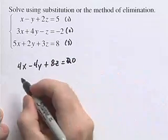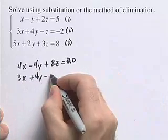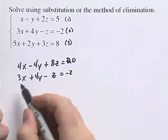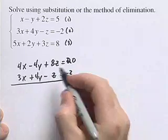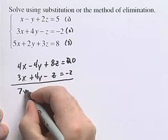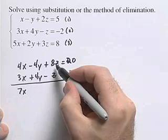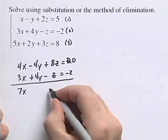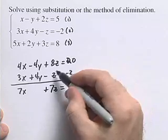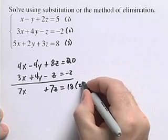We rewrite our second equation: 3x plus 4y minus z equals negative 2. To get rid of the y variable, we add these two equations together. 4x plus 3x is 7x. Negative 4y plus 4y is 0. 8z plus negative z gives us plus 7z. And 20 plus negative 2 is 18. This gives us our new equation 2: 7x plus 7z equals 18.